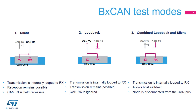The BX CAN supports three test modes. In silent mode, the BX CAN is able to receive valid frames, but it sends only recessive bits on the CAN bus, and it cannot start a transmission. Silent mode can be used to analyze traffic on a CAN bus without affecting it by the transmission of dominant bits. In loopback mode, the BX CAN treats its own transmitted messages as received messages and stores them, if they pass acceptance filtering, in a received mailbox. Loopback mode is provided for self-test functions.